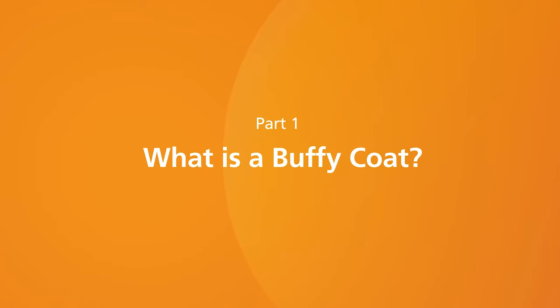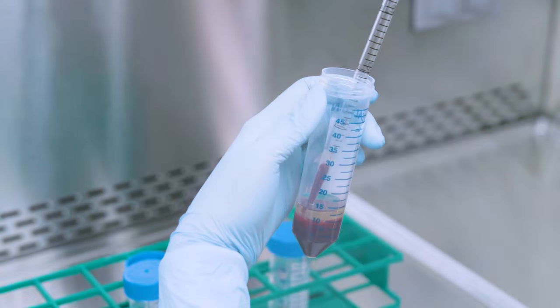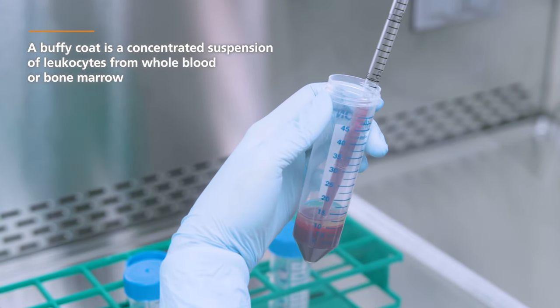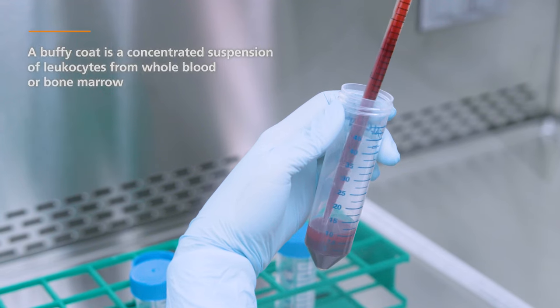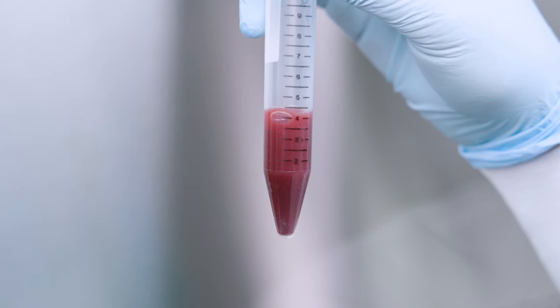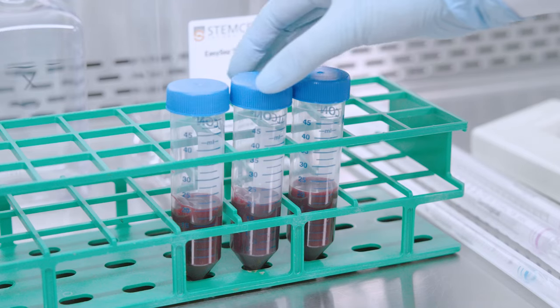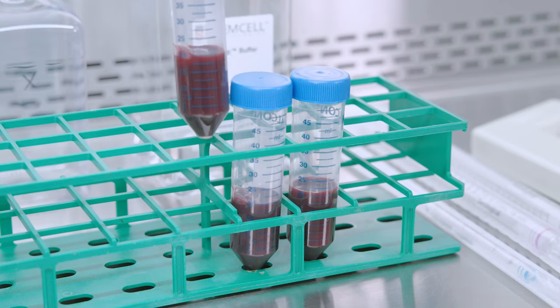Part 1. What is a Buffy Coat? A Buffy Coat is a concentrated suspension of leukocytes from whole blood or bone marrow. Generating a Buffy Coat from whole blood samples helps to concentrate large sample volumes and reduce downstream cell separation handling.